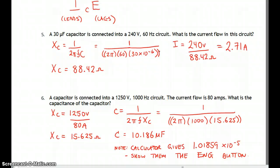You end up with 88.42 ohms. And if we have 240 divided by 88.42 ohms, that gives you a circuit current of 2.71 amps.